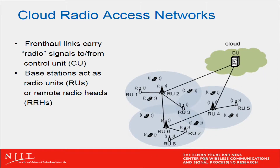This is an example of so-called virtualization techniques. The cloud unit does all the processing necessary for all the base stations connected to it, down to producing the radio signals they are supposed to transmit. These signals are transmitted on high-capacity fronthaul links to each base station. The base stations only need to send out the radio signals, so they are known as radio units or remote radio heads, shown as RU in this illustration.